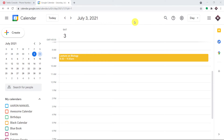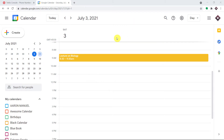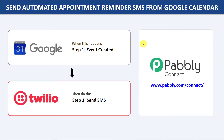This is the screenshot of the SMS that Lady George has received. You must be thinking: how did I manage to send data from Google Calendar to an SMS sending app like Twilio? I used an integration and automation software called Pabbly Connect, which integrates Google Calendar and Twilio. The best part is there is no need for coding skills or programming knowledge — it can be done easily.